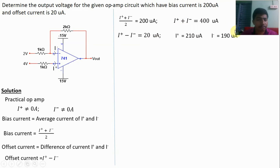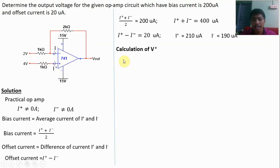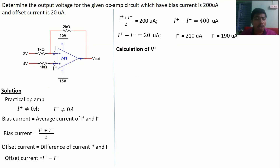For the operational amplifier, the first step is to calculate V plus. For the ideal case, I plus is zero, so there is no voltage drop across the 1 kΩ resistor and V plus equals 4 volts. But in the practical case, I plus = 210 micro ampere flows through the 1 kΩ resistor, so there is definitely a voltage drop and the remaining voltage will be V plus.